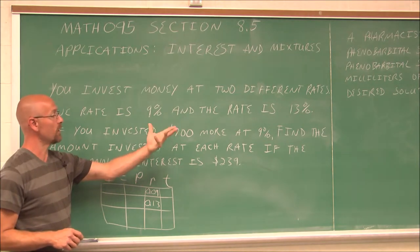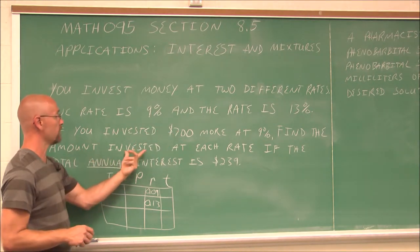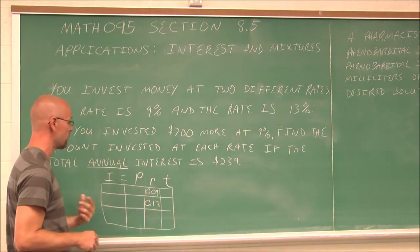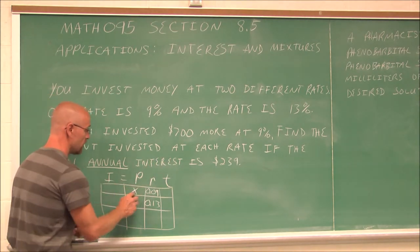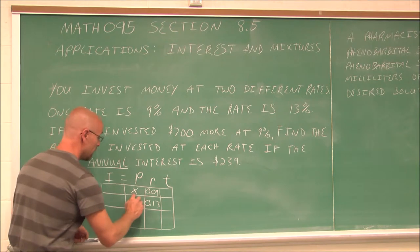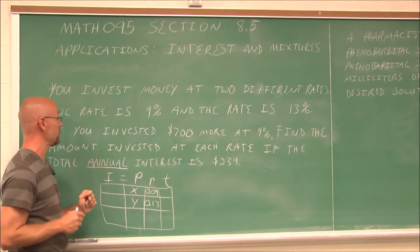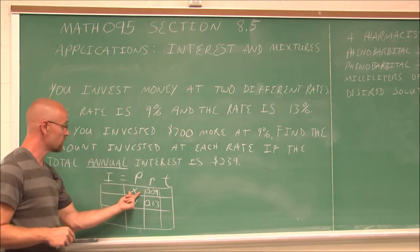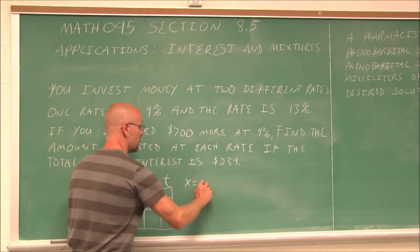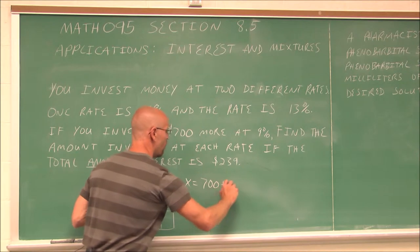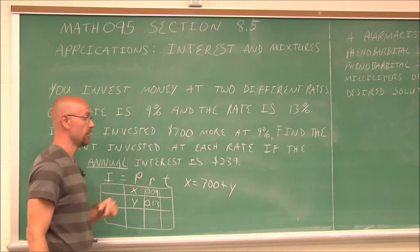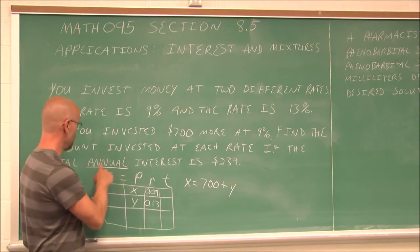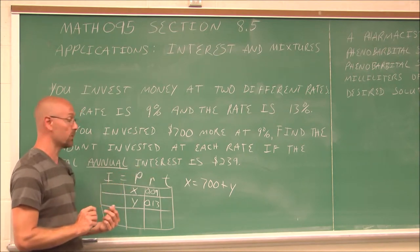If you invest $700 more at 9%, find the amount invested at each rate if the annual interest is $239. Well, our principal in one account, we don't know. In the other account, we don't know. But we're told something about their relationship. If you invested $700 more at 9%, so this value is $700 more than the other. So I just write that off to the side. And now we know annual interest of $239.